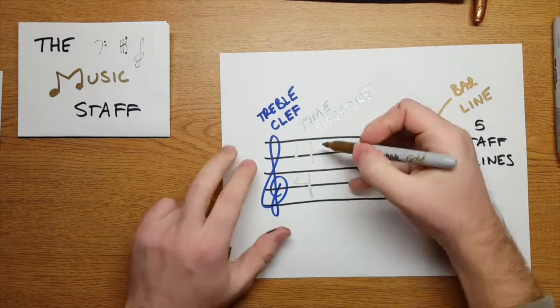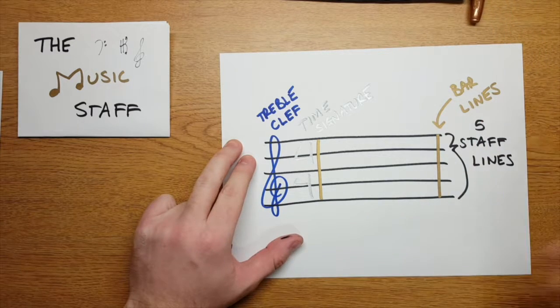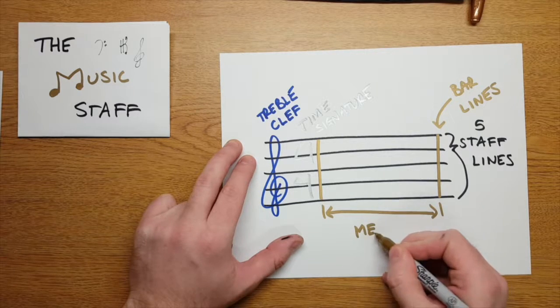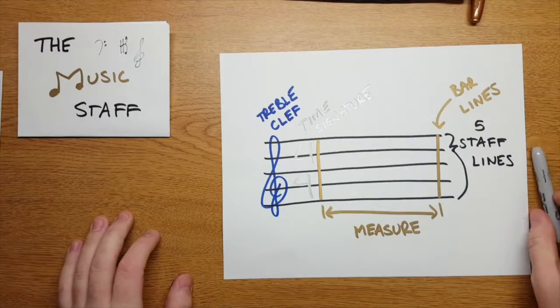When you add a second bar line to your staff, the space between those bar lines is what's called a measure. Measures do a great job keeping music organized and easy to read. You'll want lots of space in your measure to add notes later.